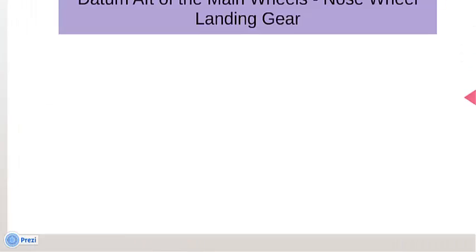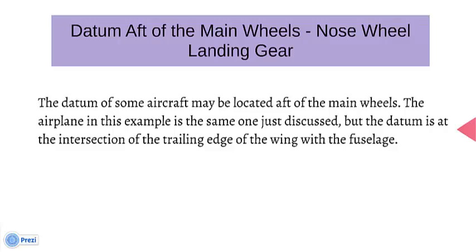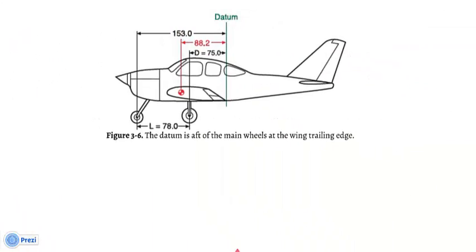Datum aft of the main wheels, nose wheel landing gear. The datum of some aircraft may be located aft of the main wheels. This airplane is the same one just discussed, but the datum is at the intersection of the trailing edge of the wing with the fuselage. The distance D between the datum in Figure 3-6 and the main wheel weighing points is 75 inches. The weight of the nose wheel F is 340 pounds, the distance between main wheels and nose wheel L is 78 inches, and the total net weight W is 2,006 pounds.